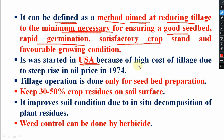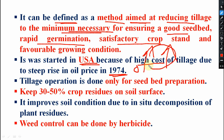Minimum tillage was first started in the US because of the high cost of tillage due to the steep rise in oil prices in 1974. Due to this, machinery used more oil, resulting in higher input costs.